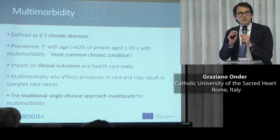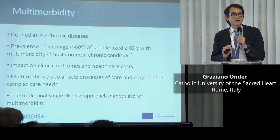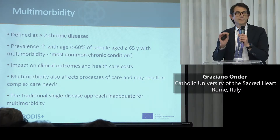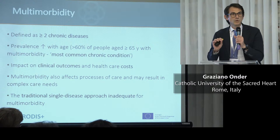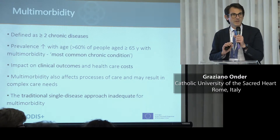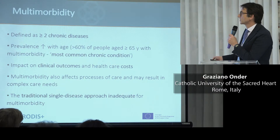Before I start, just a quick overview for those of you that are not familiar with the term multi-morbidity. What is multi-morbidity? Multi-morbidity is the occurrence of two or more chronic diseases. It's the most common feature or characteristic of older adults — two-thirds of the older population has multi-morbidity. Somebody has defined it as the most common chronic condition.